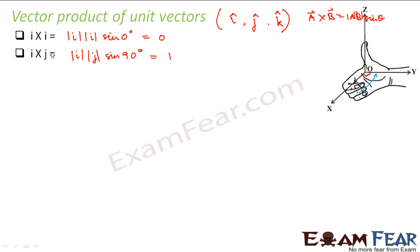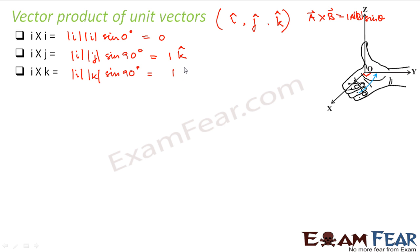For i cross k: the magnitude is i·k·sin90° = 1. Curling the fingers from i toward k, the thumb points in the −j direction. So i cross k = −j. For j cross i: the magnitude is again 1. Since i cross j = k, by the anti-commutative property j cross i = −k.